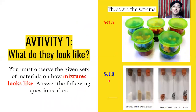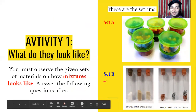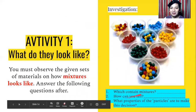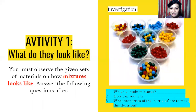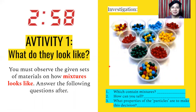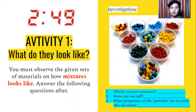For activity number one, observe the given sets of materials to see how mixtures look. We have setup A with containers full of beads, and setup B with different substance sets. I want you to investigate the containers — we have ten containers with different colors and sizes of beads. Observe for a few minutes using your five senses, especially your sense of sight, and think critically.